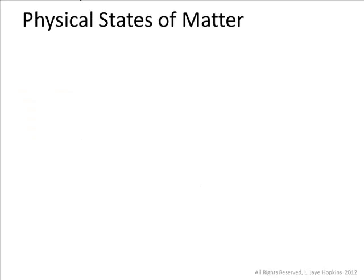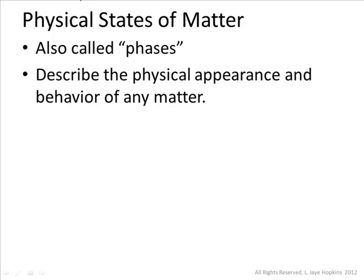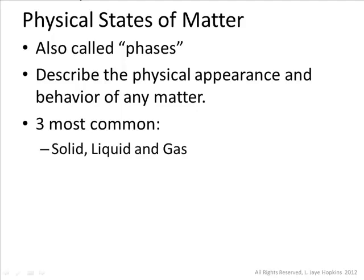When it comes to describing different types of matter, one of the first things people often notice is what its physical state is. Physical states can also be called phases of matter — for us, these mean the same thing. These physical states simply describe the physical appearance and behavior of matter. You're probably going to recognize the three most common phases of matter, because they're words we use in everyday life: the solid state, the liquid state, and the gas or gaseous state. Solids, liquids, and gases are the three physical states of matter we're most likely to run into in our day-to-day lives, and they're what we'll focus on for now.